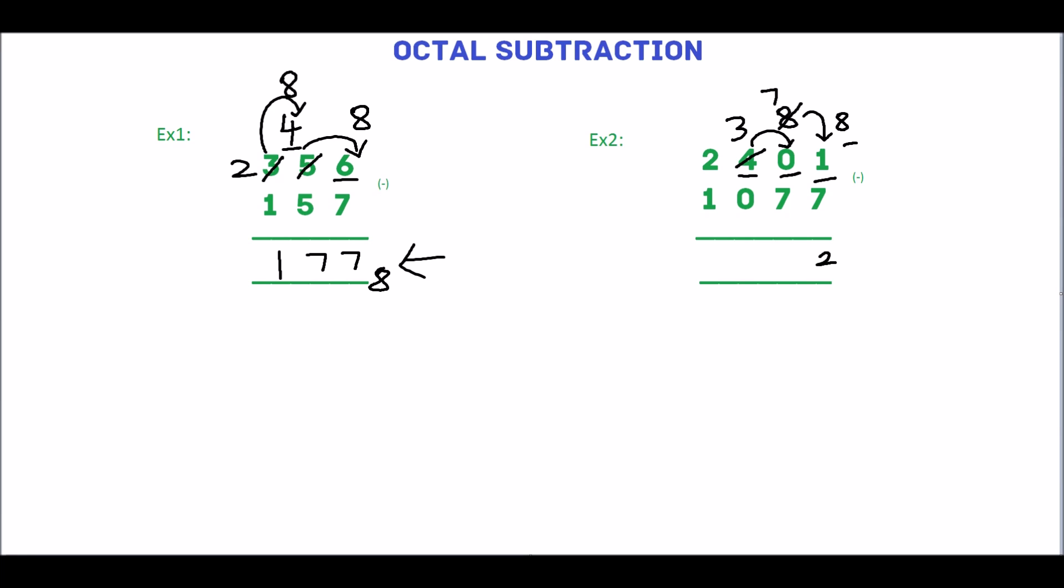In the second digit we have 7. 7 minus 7 is 0. The third digit we have 3. 3 minus 0 is 3. 2 minus 1 is 1.